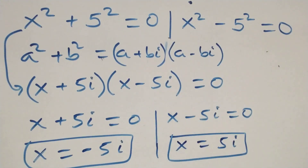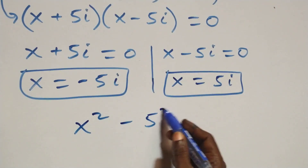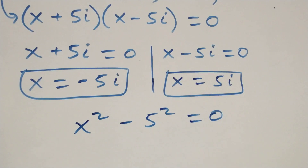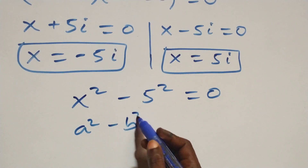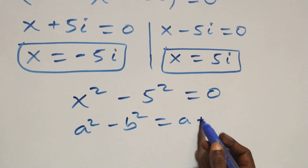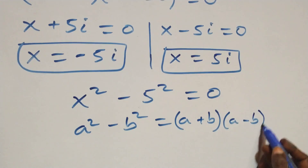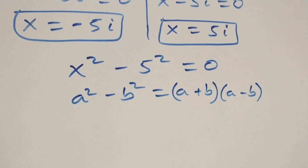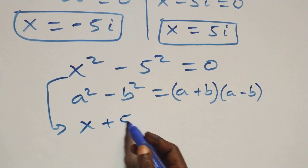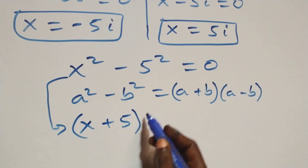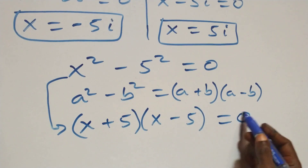Then solving on this side: x squared minus 5 squared equals to 0. This also follows the identity a squared minus b squared, which is the same thing as (a plus b) into brackets, open brackets (a minus b). So it becomes: (x plus 5) into brackets, then open brackets (x minus 5), equals to 0.